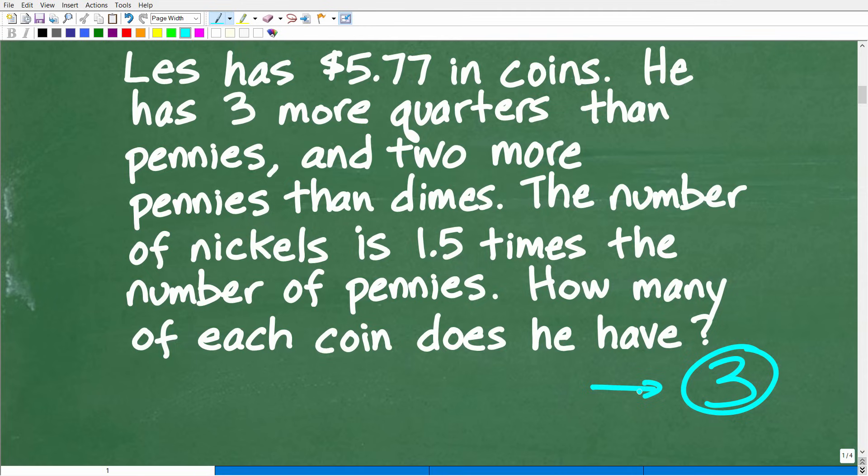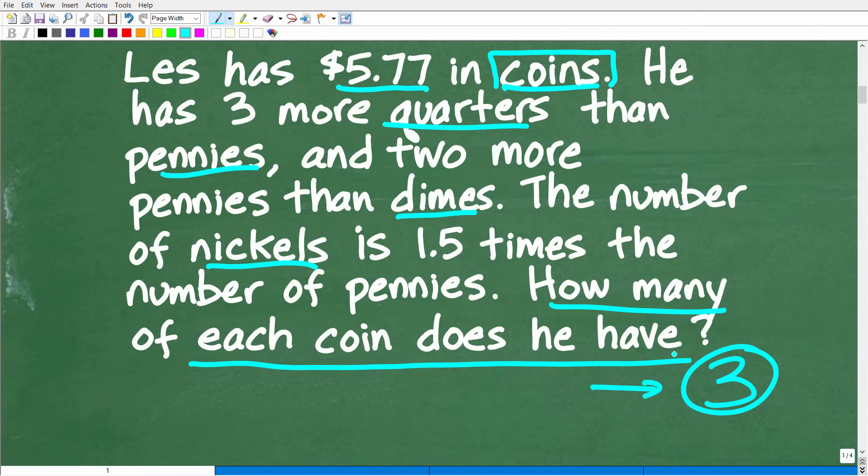So we have a lot of information again here. And Les has $5.77 in coins. So there are no like dollar bills or $5 bills, anything kind of going on here. This problem pertains only to coins. And of course, we're talking about quarters, pennies, dimes, and nickels. And there's all these relationships amongst these quarters, pennies, and dimes, and nickels. And the question is, how many of each coin does Les have?